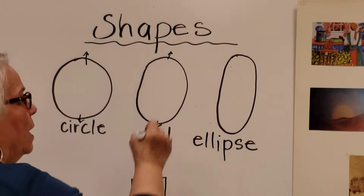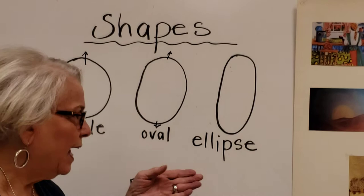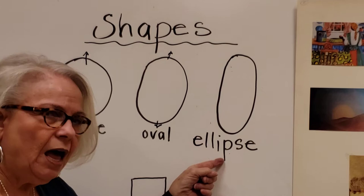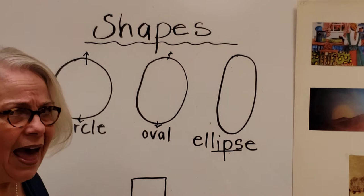And if you stretch out the oval a little bit on the ends, you will get an ellipse. Now an ellipse is kind of a long word, but I always remember it like this — right in the middle of the ellipse is the word 'lips.' So you can remember it that way. It's a stretched out oval shape.